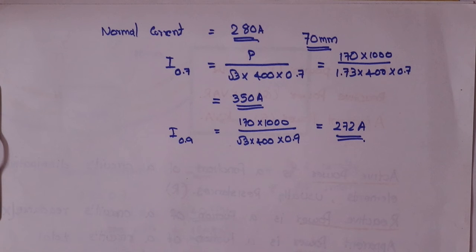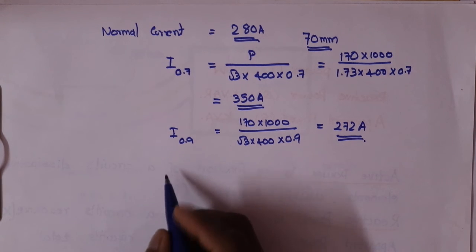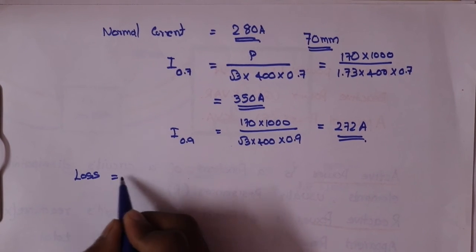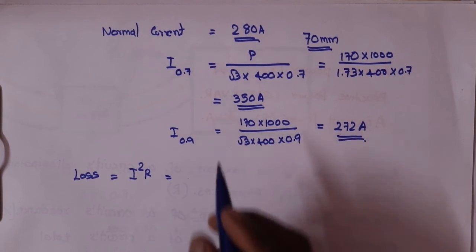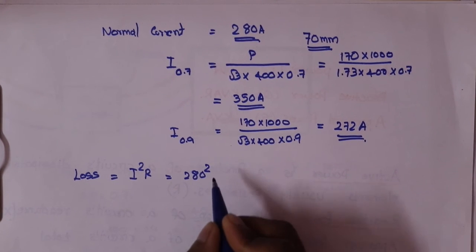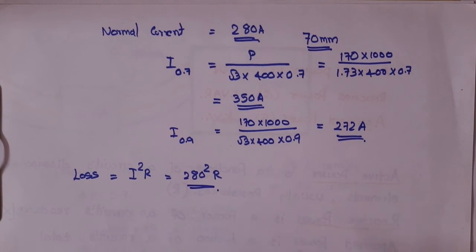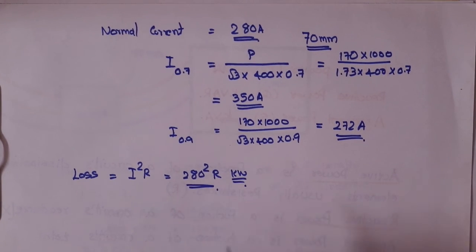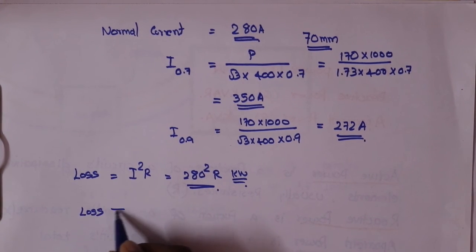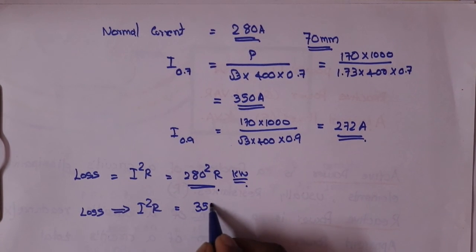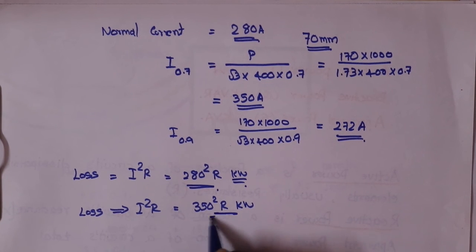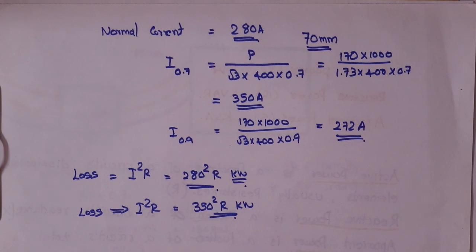I²R losses are significant here. I²R loss is equal to I² × R. With 280 amps, the rate of loss is 1400. I²R loss is equal to 250 squared into R. I²R loss is equal to 350 squared into R. So here, 350 squared versus 280 squared — we are wasting so much more energy with poor power factor.